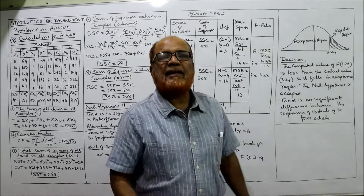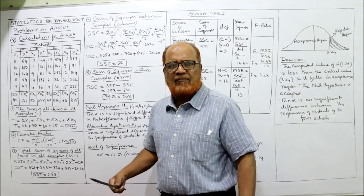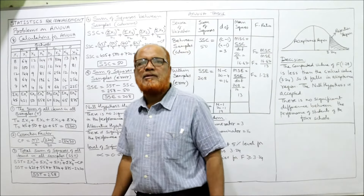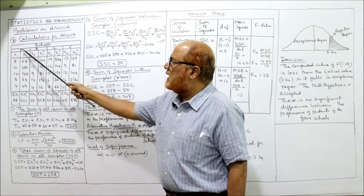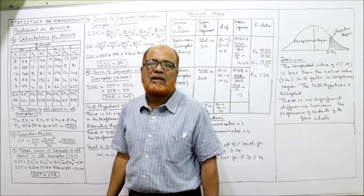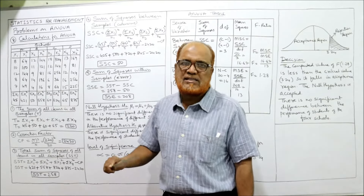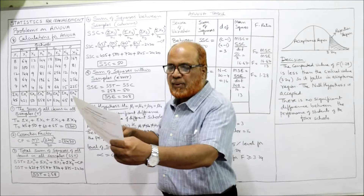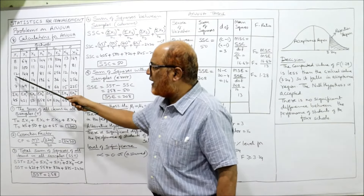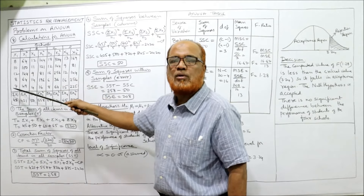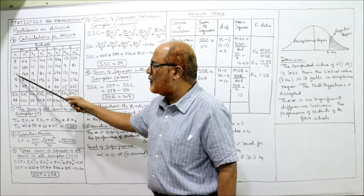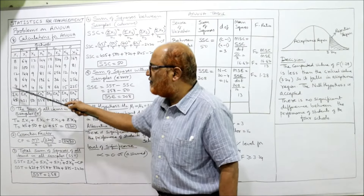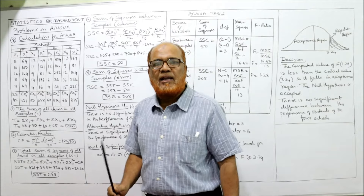We will make the calculations for ANOVA as usual — the same table as in the last four problems. In the columns I am taking the samples, which here are the schools A, B, C, D. For each school we have two columns: x1 and x1-squared, x2 and x2-squared, and so on. x1 values for school A are 8, 10, 12, 8, 7. Squaring gives 64, 100, 144, 64, 49. Summation x1 = 45 and summation x1-squared = 421. Similarly, take totals for B, C, D.